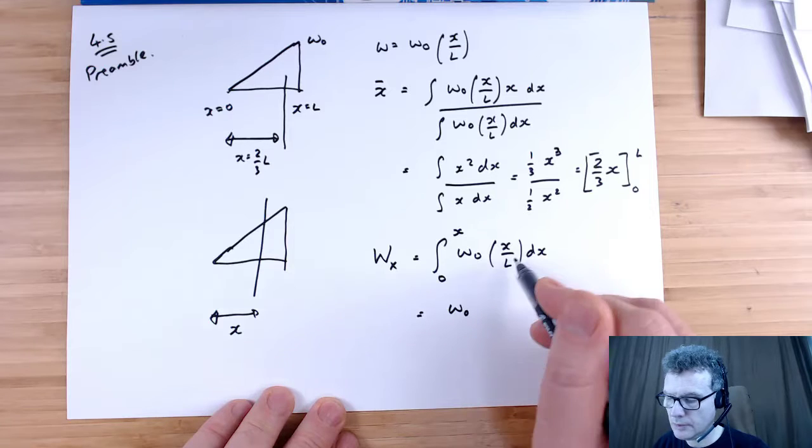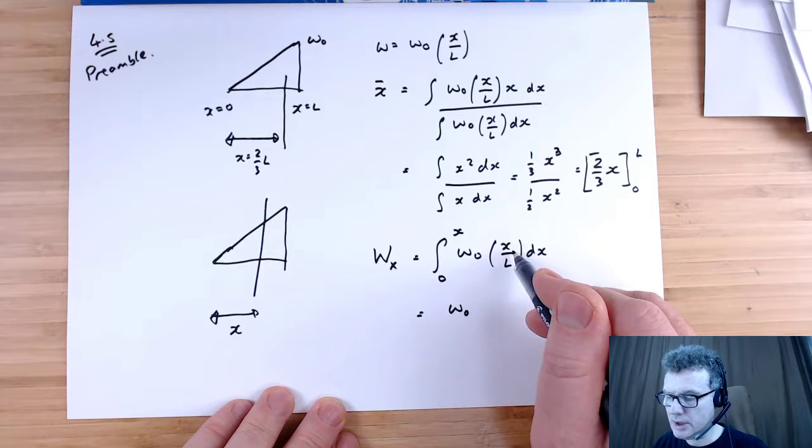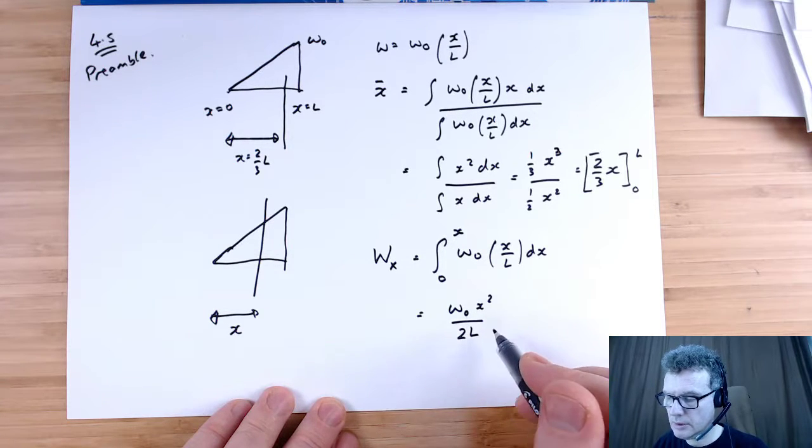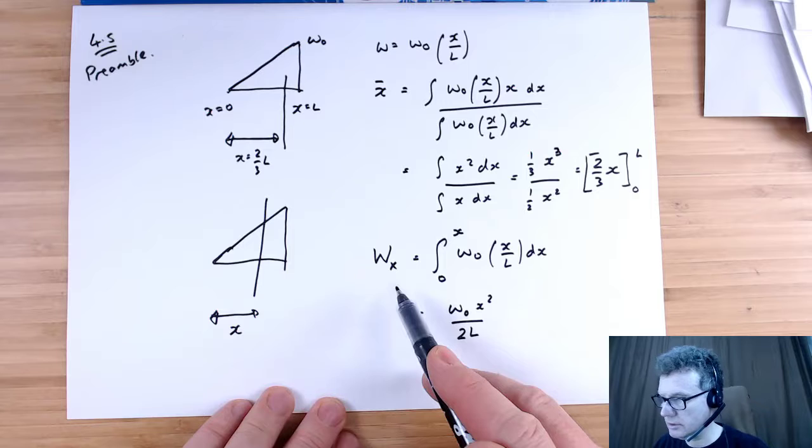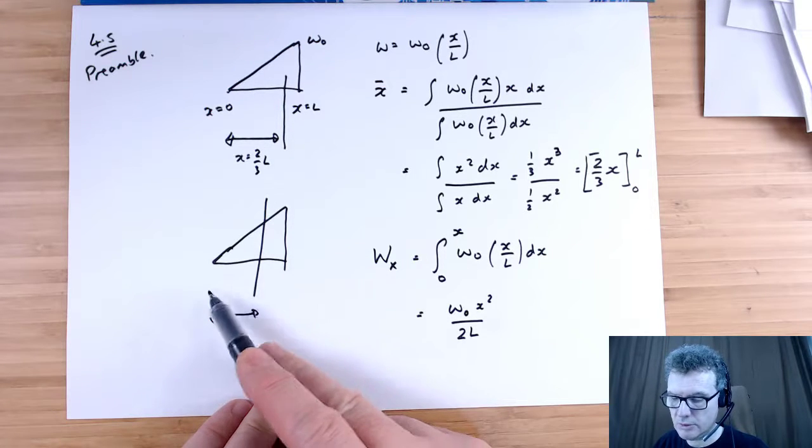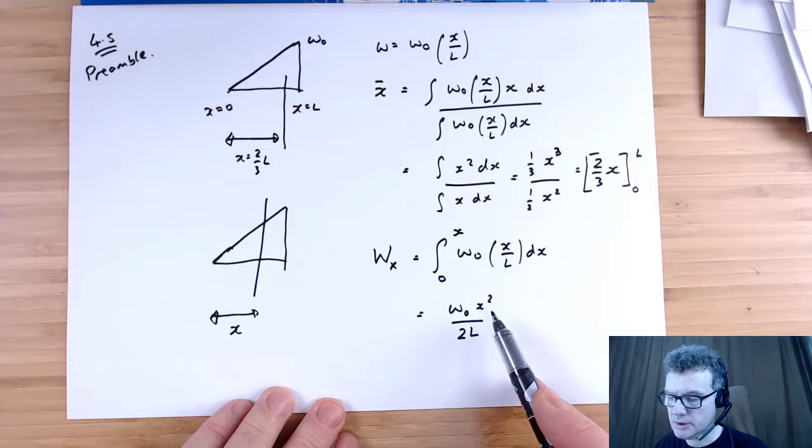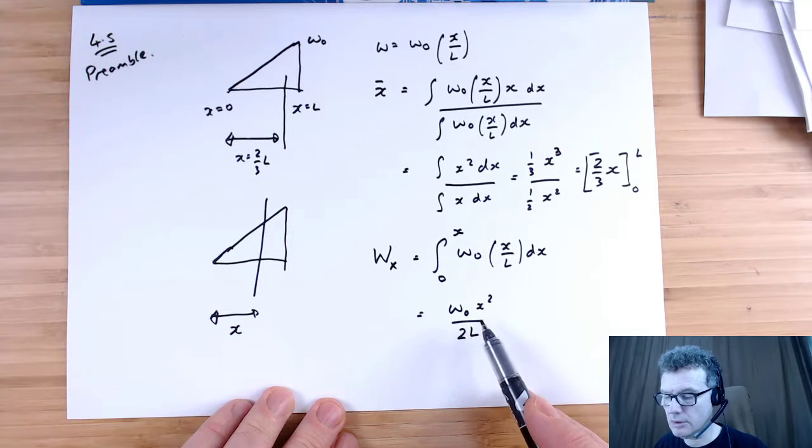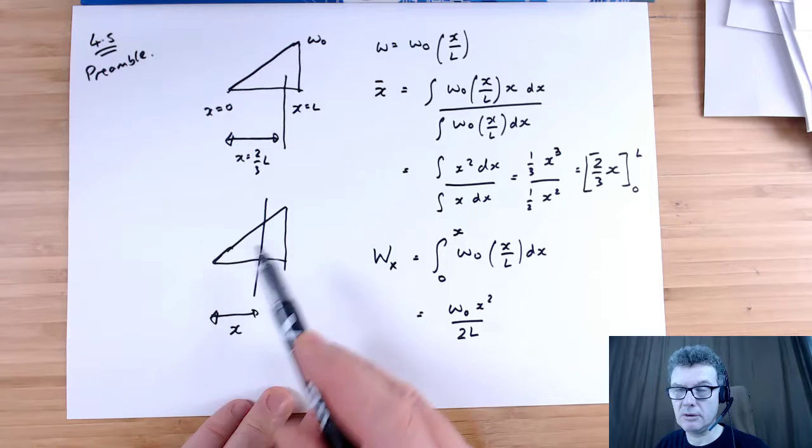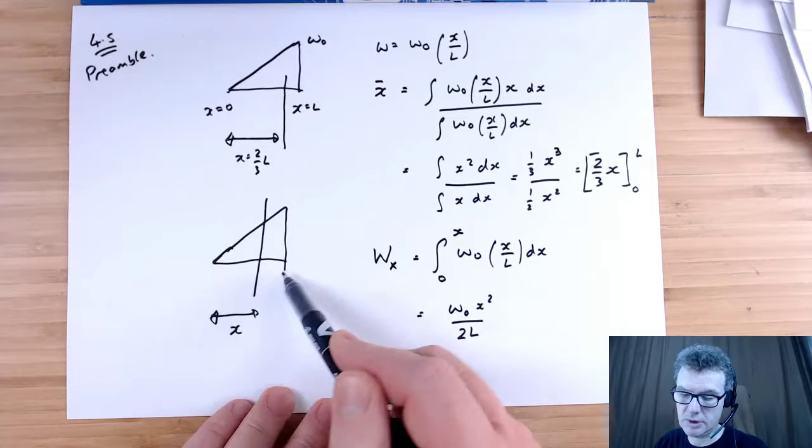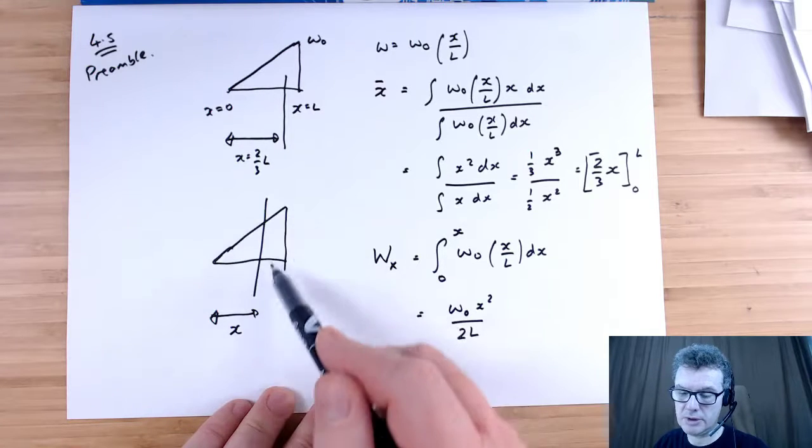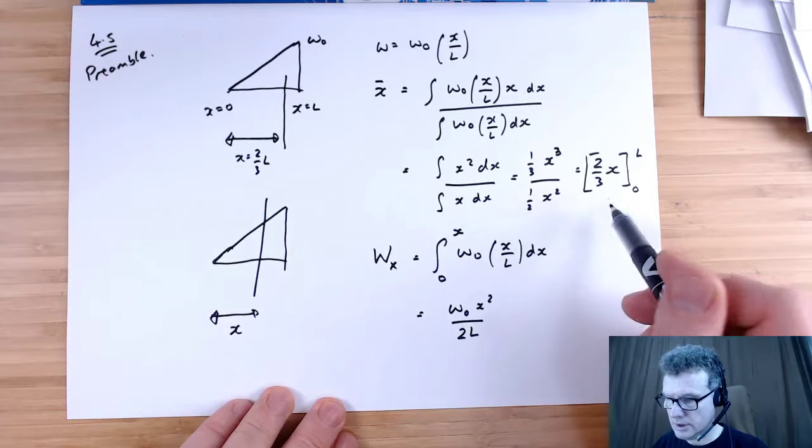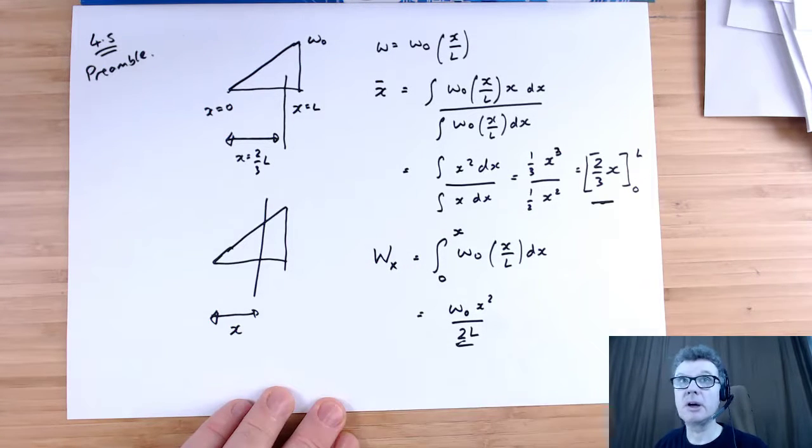That gives me a function for how much weight we've got left of x. Notice that when we put in x equals L, we end up with w0 L divided by 2, so it's the area of half a triangle, half base times height. These two results I'm going to use. Okay, I'll stop there.